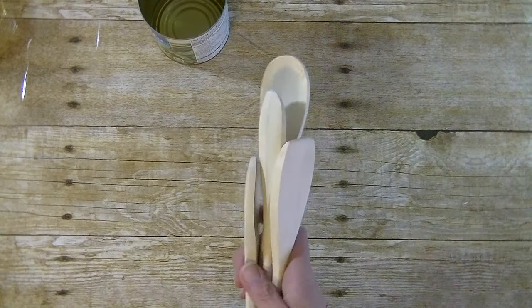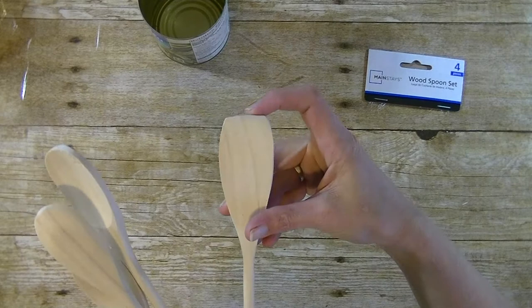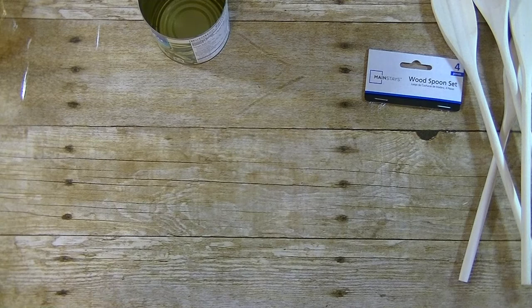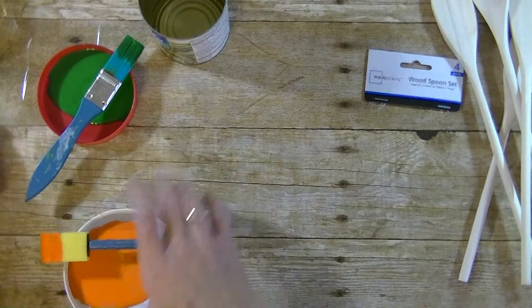The first thing we need is a can. I just have an old green bean can here. You want to pick up some wooden spoons. We got a 4-pack from Walmart, the Mainstays brand, 88 cents. This one is nice because it does have that flat top, which is perfect for Frankenstein. You will need orange paint, green paint, and white paint.